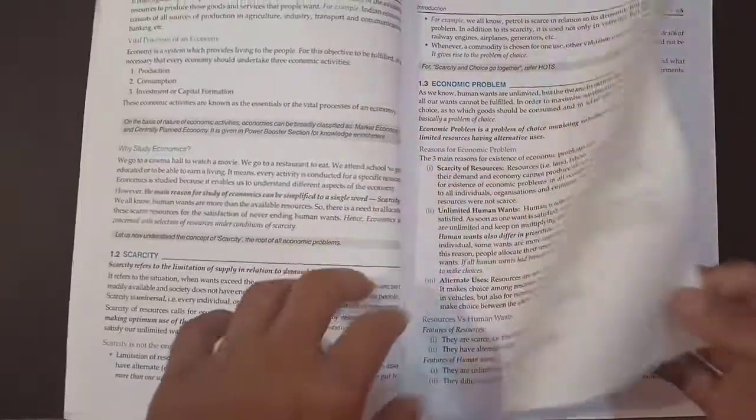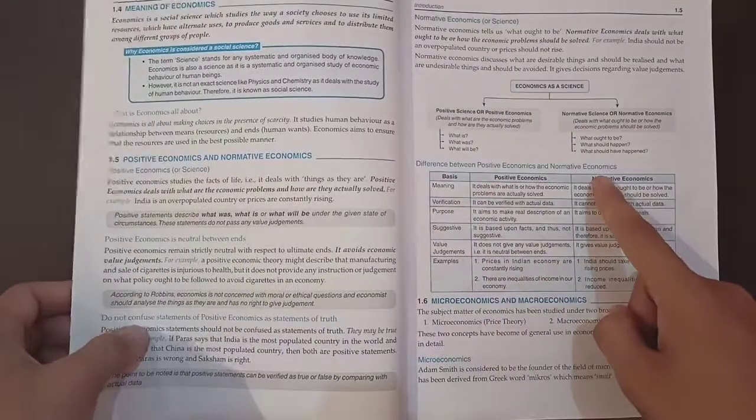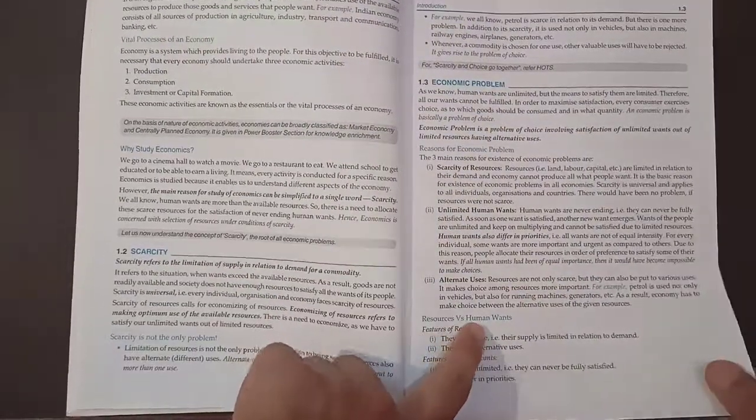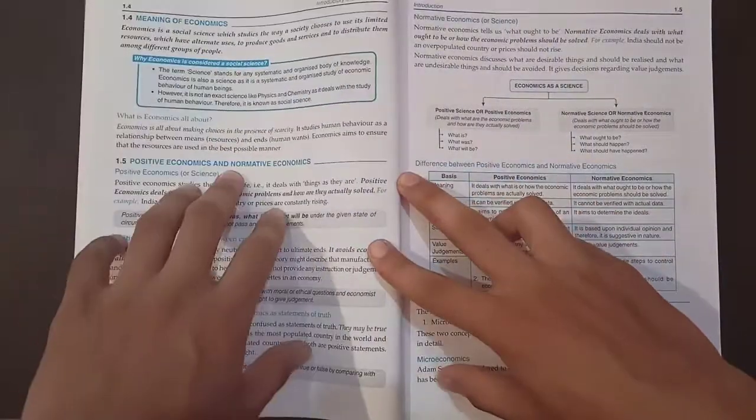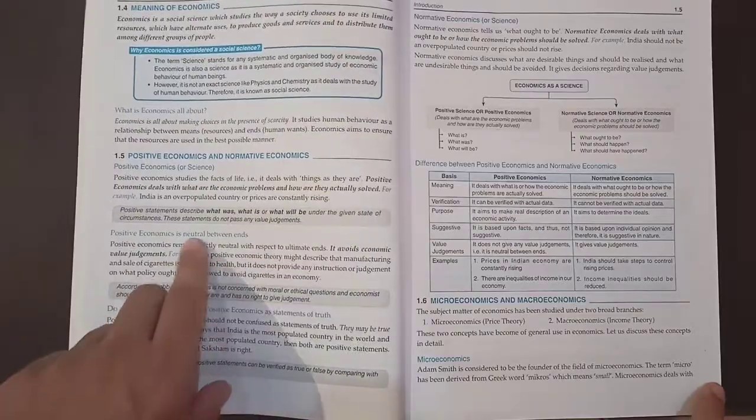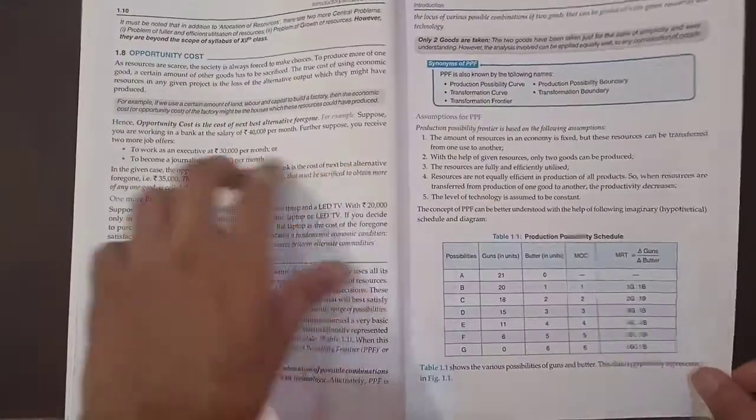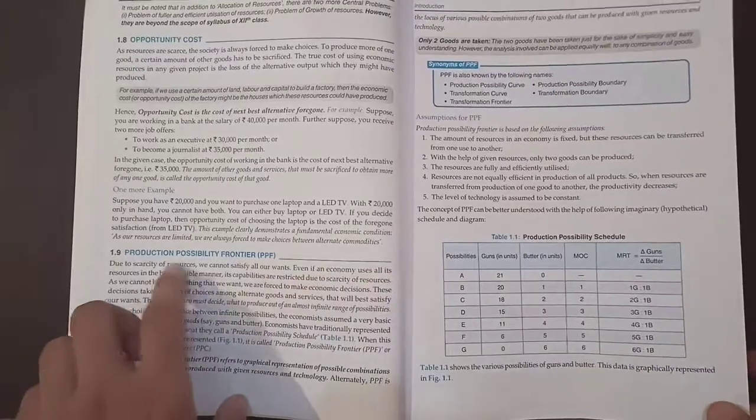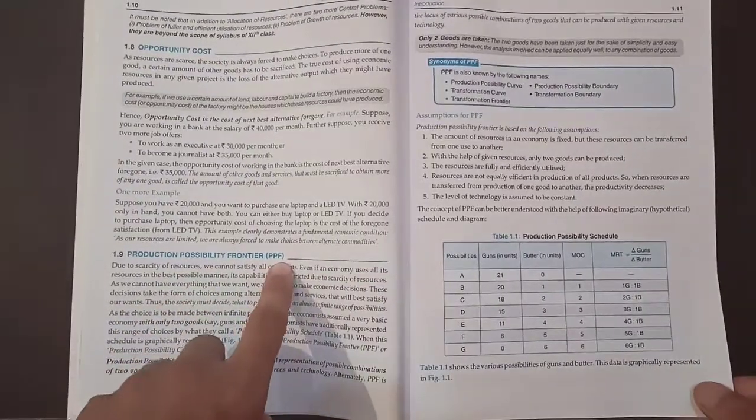Then we have scarcity, economic problems. Next topic, we have reasons for economic problems. Then you can see differences here. Then we have resources versus human wants, meaning of economics, positive and normative economics. Very nice explanations. I like the way of this book. Opportunity cost, assumptions of PPF - Production Possibility Frontier.